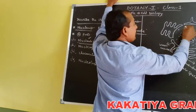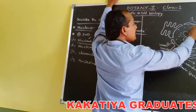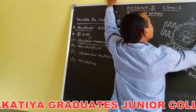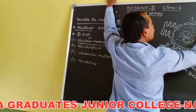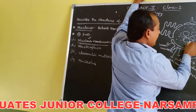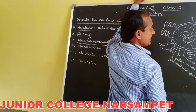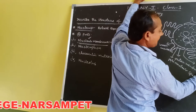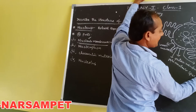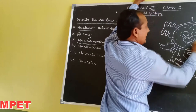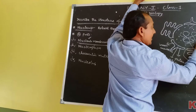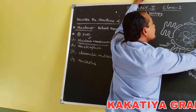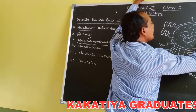A fluid substance present inside the nucleus is called nucleoplasm or caryoplasm. The fine thread-like structures present in the nucleoplasm are called chromatin. The small round-shaped structure present in the nucleus is called nucleolus.